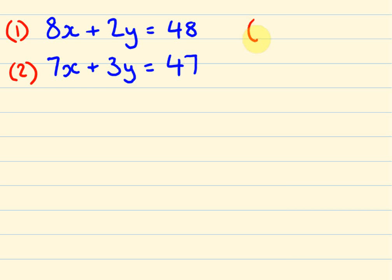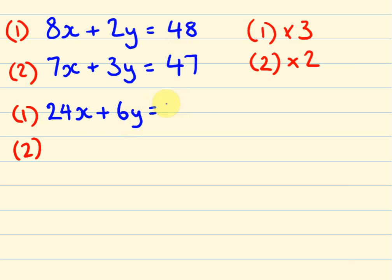So we're going to times equation 1 by 3 and equation 2 by 2. So down here I'll write, we'll work out the result of those. So we times this by 3, we get 8 by 3 is 24X plus 6Y and it equals 48 by 3 which is 144.